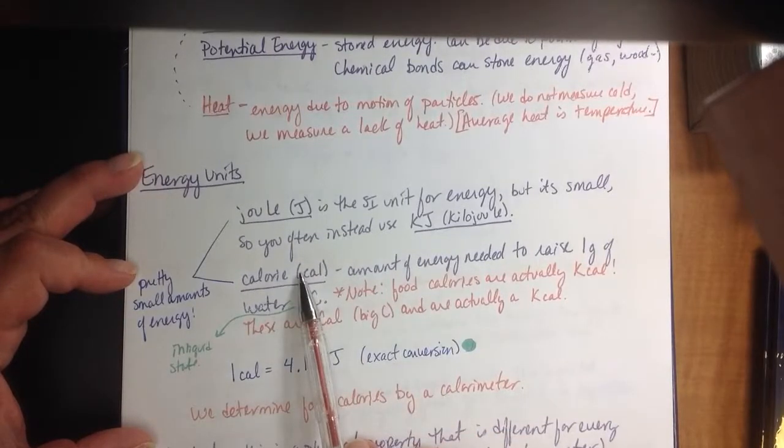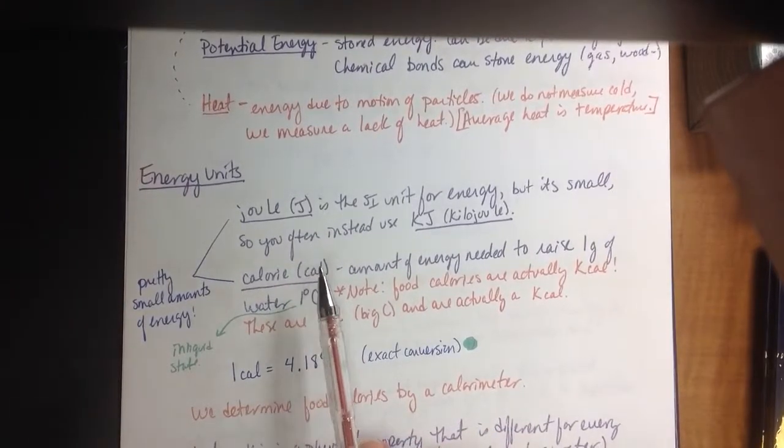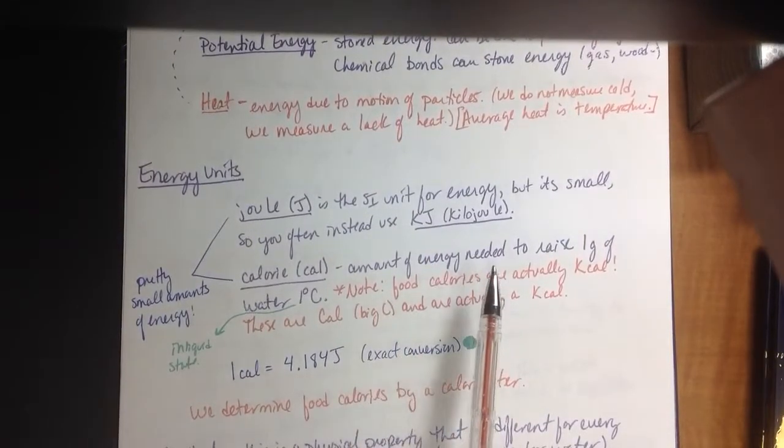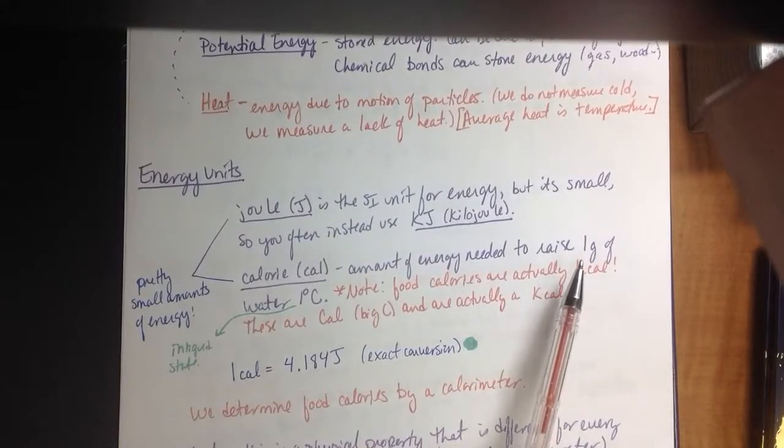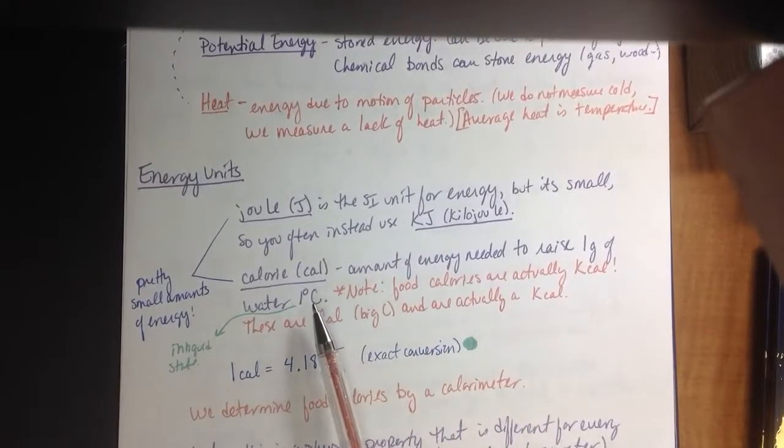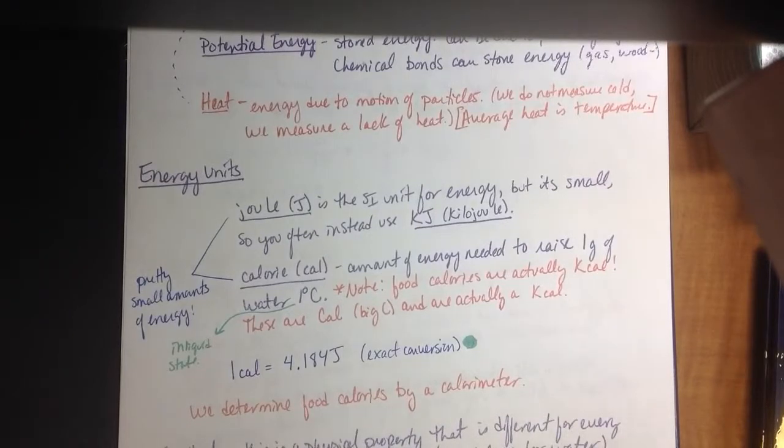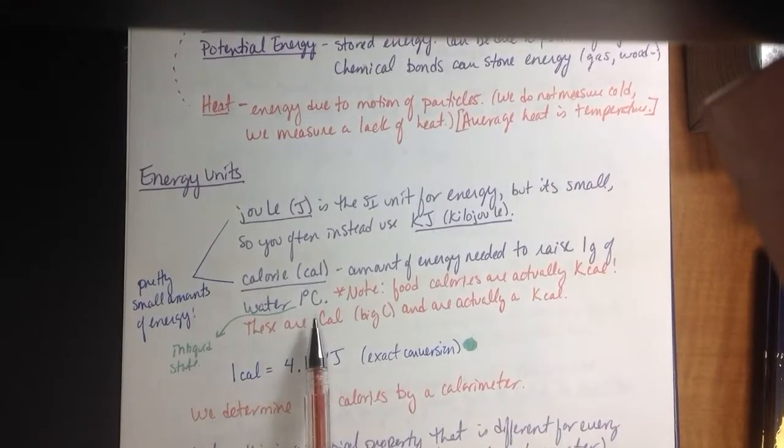A calorie is another type of unit that we use. Calorie is defined as the amount of energy needed to raise one gram of water one degree Celsius. So one gram is about the weight of a dollar bill. Tiny, tiny amount of stuff. One degree Celsius is not that much.